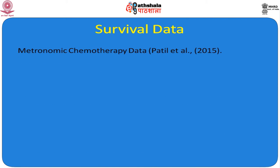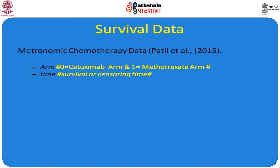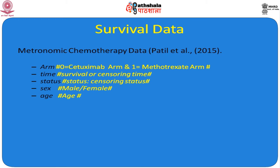This data is taken from a metronomic chemotherapeutic trial published by Patil et al. in 2015 in the Journal of Oral Oncology. The partial dataset is considered here where arm is denoted as 0 for the cetuximab arm and 1 for the metronomic arm. The time variable is considered as survival or censoring time. Status represents the patient's status at the end of follow-up as censored or not censored, with 1 representing censored. The fourth variable is sex — male or female — and the fifth variable is age at study initiation.